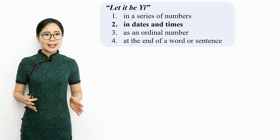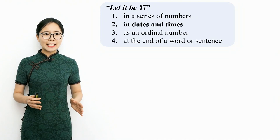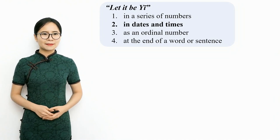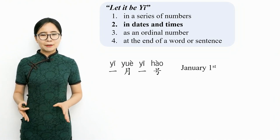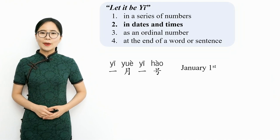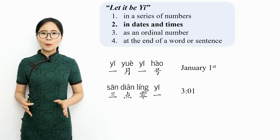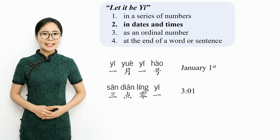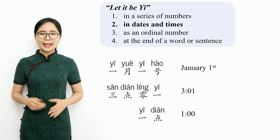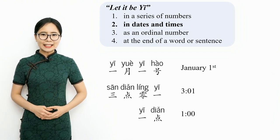The 'let it be Yi' rule also applies when Yi is used in dates and times. For example, January 1st is Yi yue yi hao. 3:01 is san dian ling yi. And one o'clock is Yi dian.